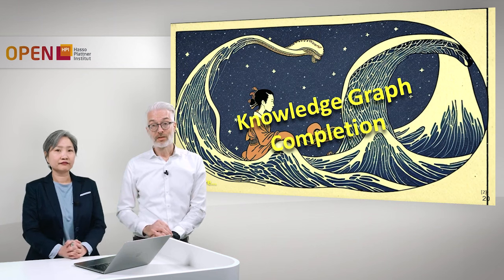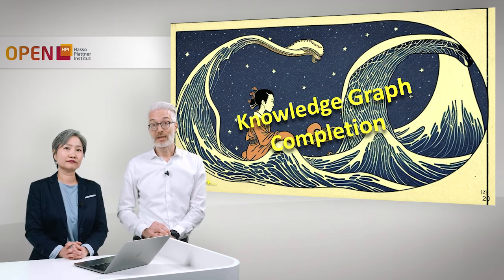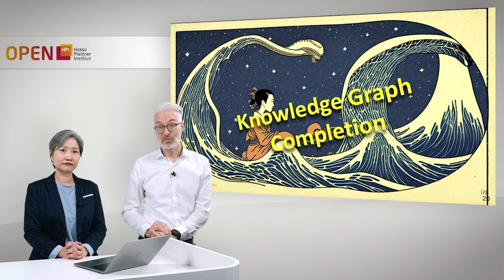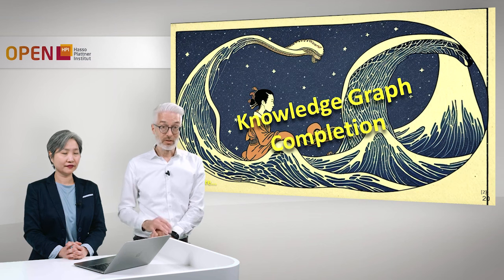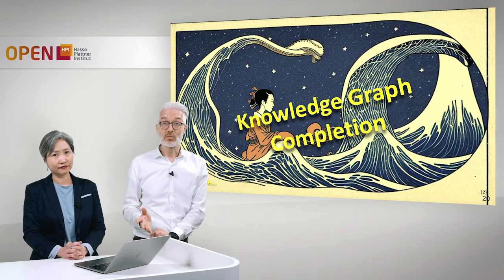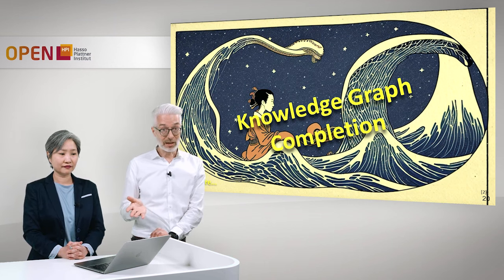So far so good. In the next lecture we will see how we can apply knowledge graph embeddings for a specific task: knowledge graph completion. Knowledge graphs are not necessarily always complete — there is always missing information — and with embeddings we have the possibility to predict missing links.